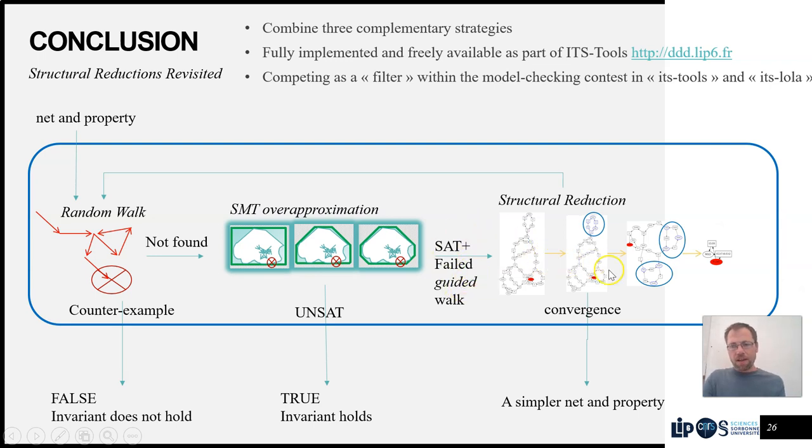So we're going to try to apply the structural reduction rules we saw and reduce the net as much as we can. If there are no more reductions to be performed, we consider we have converged and we're going to output the resulting net and property. Otherwise, we're going to loop back here and do this procedure again.